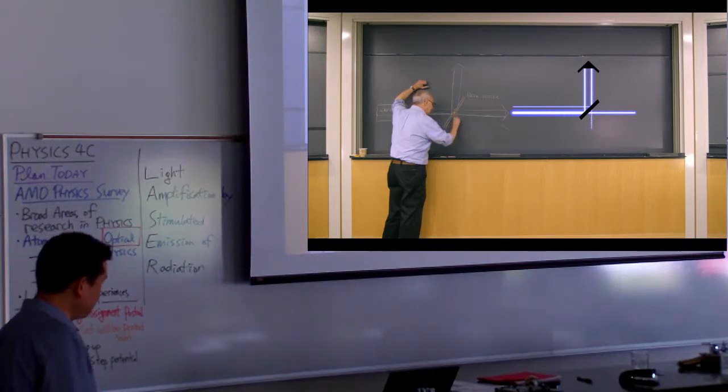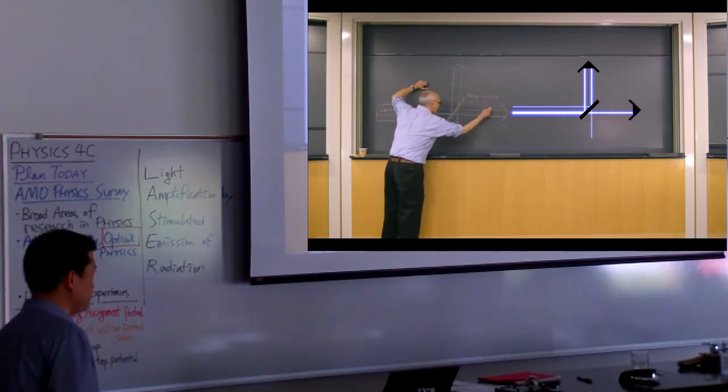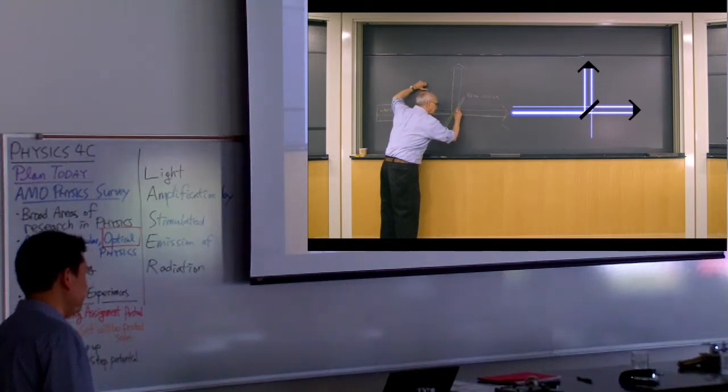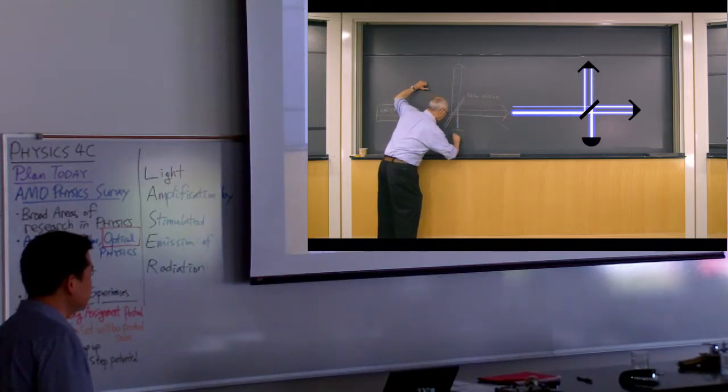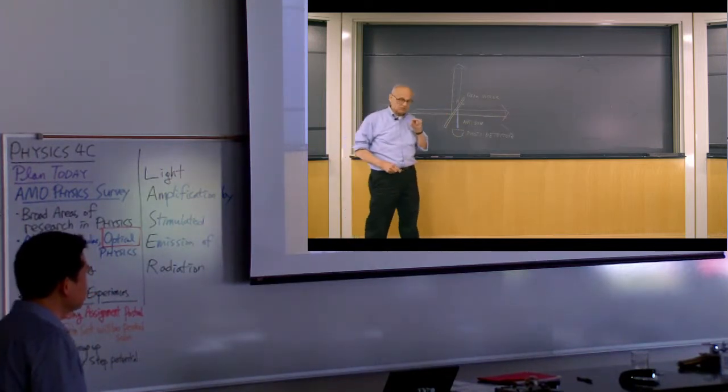But there's also a line that comes this way. Light hits this thing and also gets reflected. They both get reflected together and come to a photodetector. Here is the photodetector. And remember what happens with light waves.